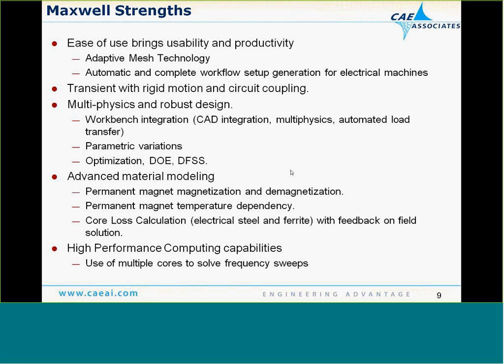Maxwell also allows parametric variations using Design Explorer and the Workbench parameter manager. It has advanced material modeling including permanent magnetization and demagnetization, temperature dependency, and core loss calculations. Maxwell supports multiple processors — we can use multiple cores to solve frequency sweeps or parametric variations simultaneously, rather than solving them in series.